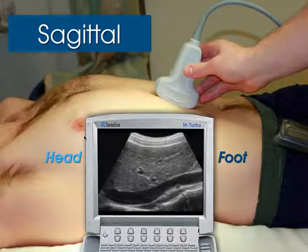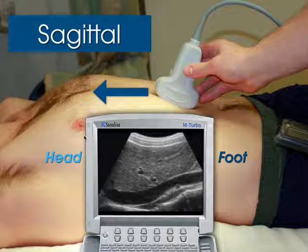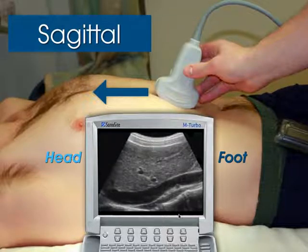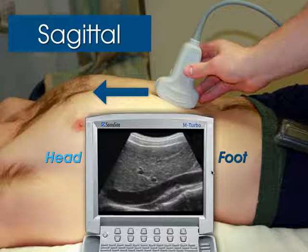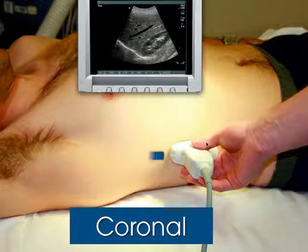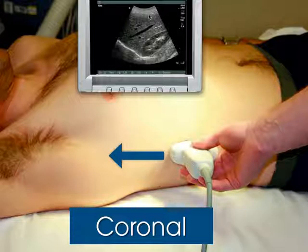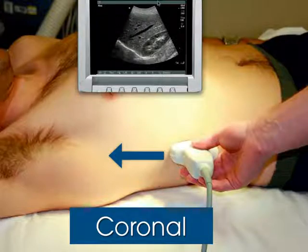The basic scanning planes: the sagittal plane has the indicator aimed towards the patient's head — sagittal means long axis when approaching anteriorly. Superior is towards the head, inferior towards the foot. If you move the probe from the anterior location to the side of the body while staying in a longitudinal plane, it becomes a coronal plane. In coronal, lateral is on one side, medial on the other, with the indicator still towards the patient's head.